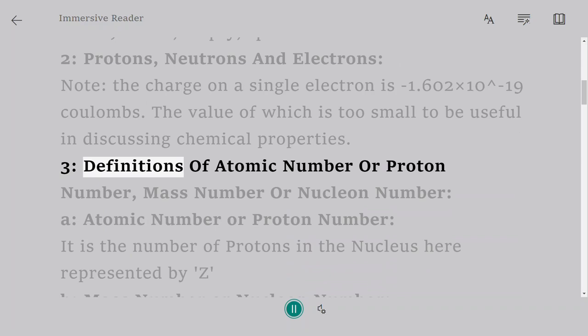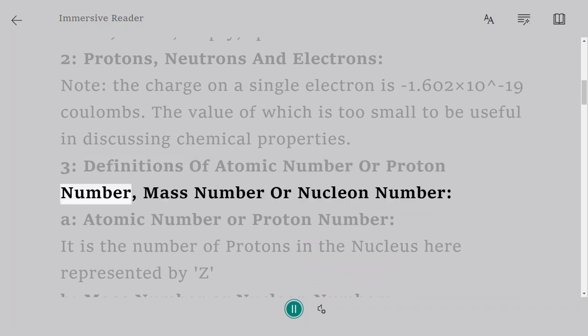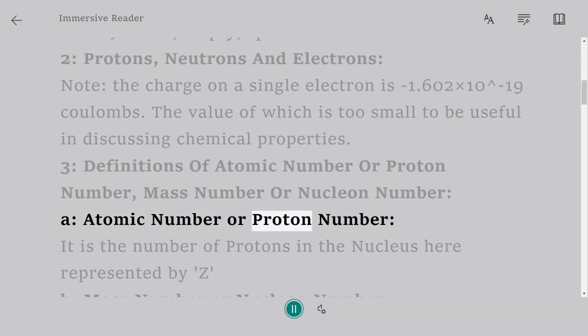3. Definitions of Atomic Number or Proton Number, Mass Number or Nucleon Number. A. Atomic Number or Proton Number.